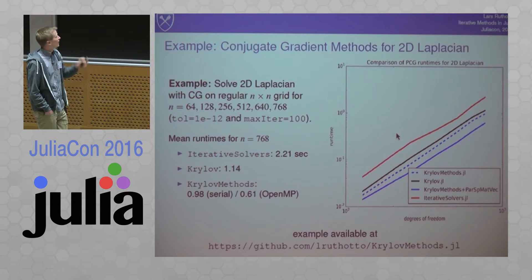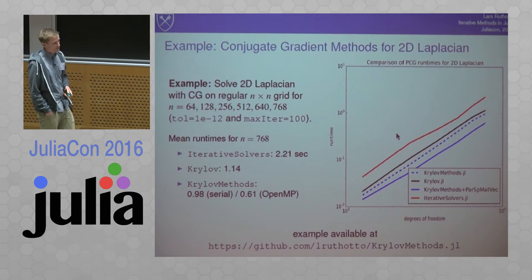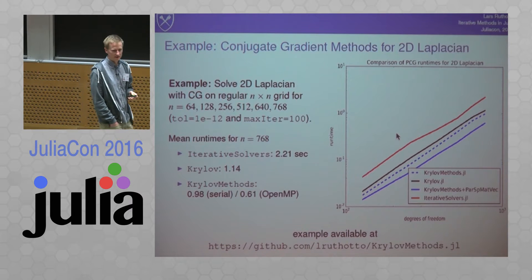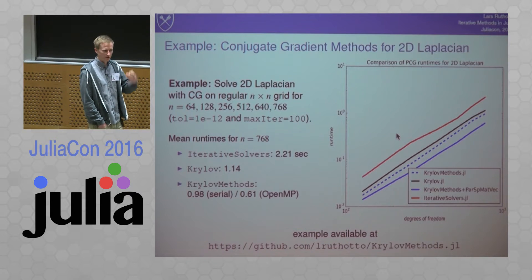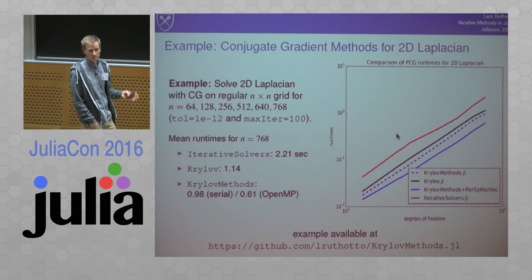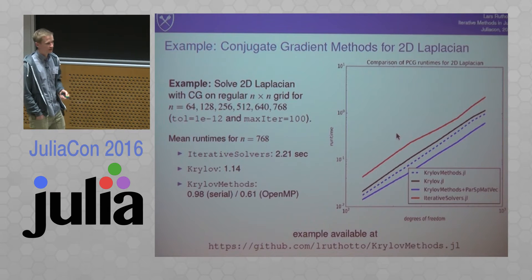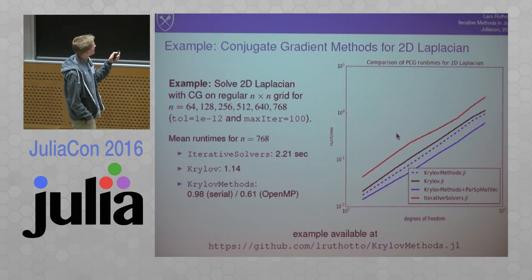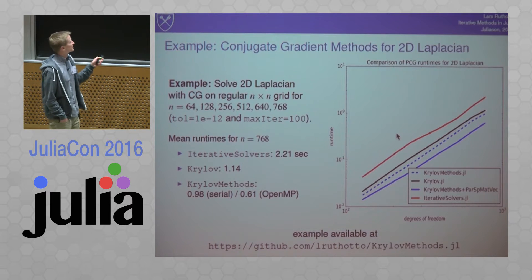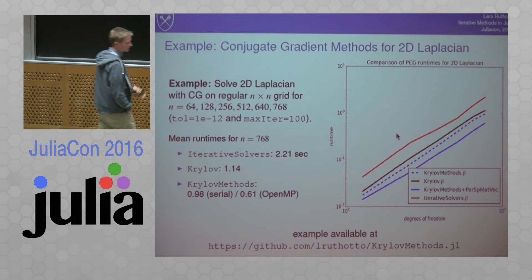I used a package called ParSpMatVec.jl, which is a Fortran-based package we use for having shared-memory parallel sparse matrix-vector products. Take this dotted line here, because the parallel sparse matrix-vector products can be used in any of these methods.